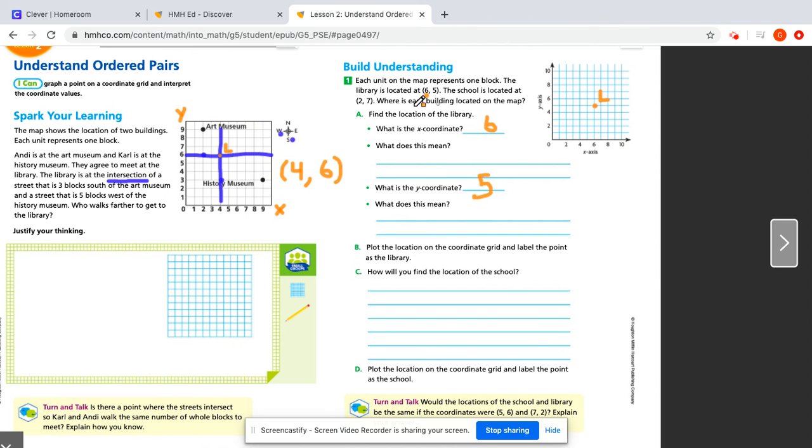And then it says how do you find the location of the school? So same exact thing. They told us that the coordinates are 2, 7, so to find the coordinates of the school, you would go 2 away from the Y axis on the X axis to find 2. And then you would go up 7, away from the X axis. And again label that S for school.